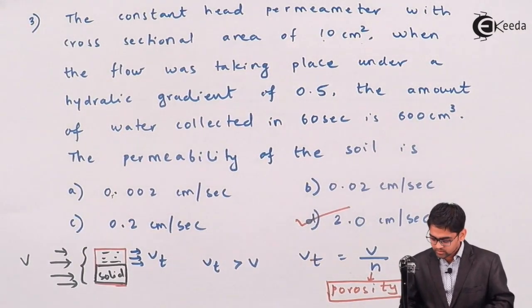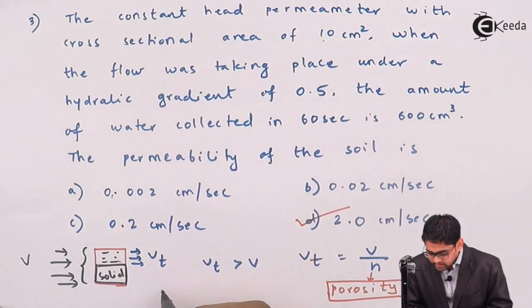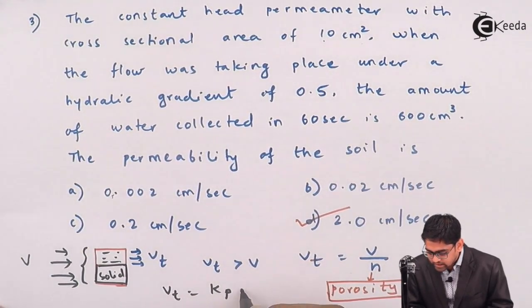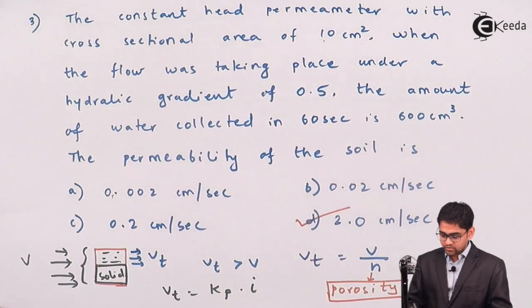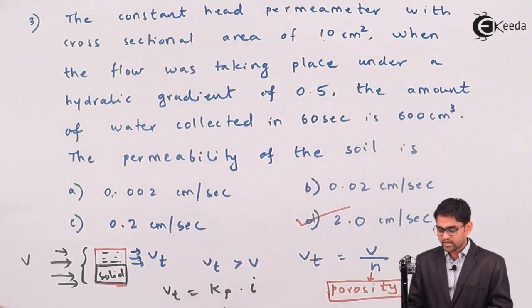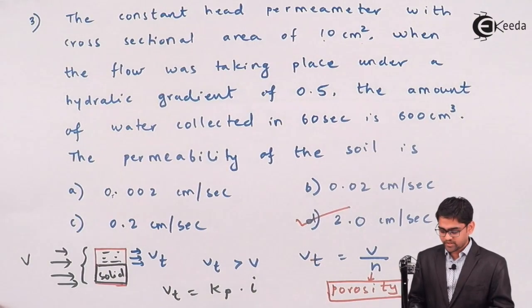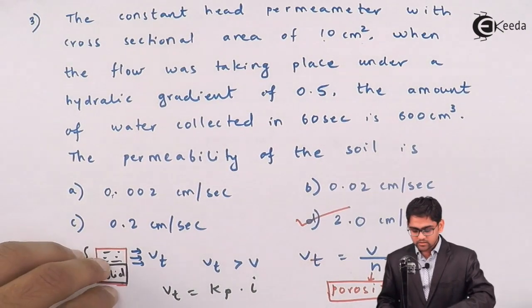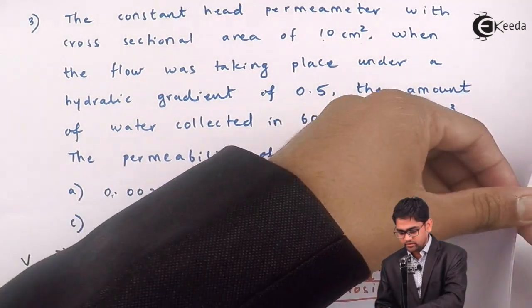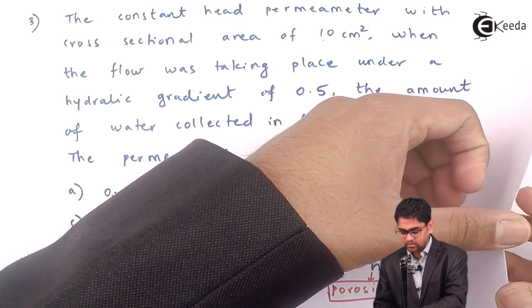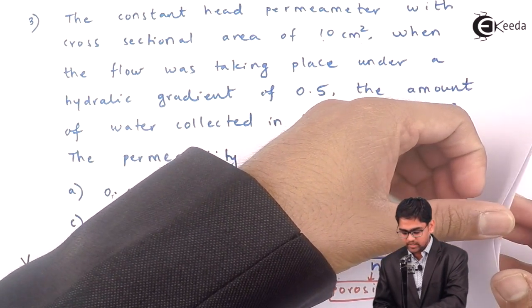And also, we have also seen the expression like the true velocity nothing but coefficient of percolation into hydraulic gradient I. So, they may ask you to evaluate Kp, which is nothing but coefficient of percolation. But as far as this problem is concerned, there is no need to calculate the coefficient of percolation.